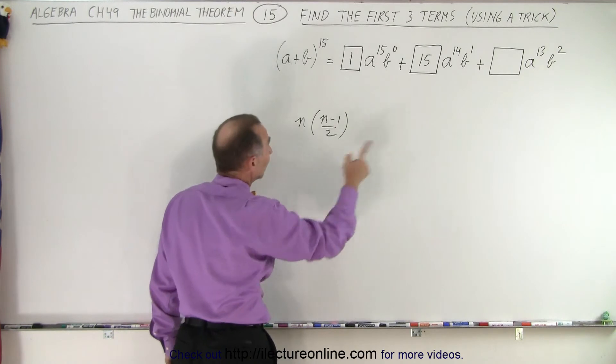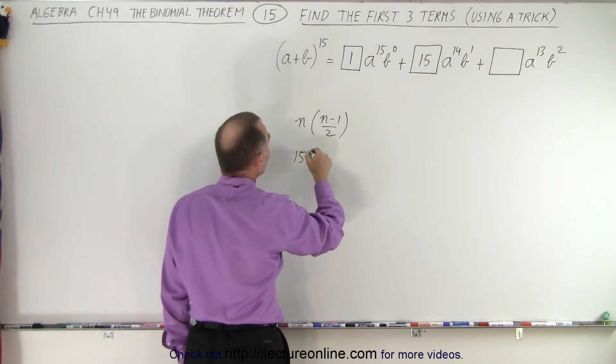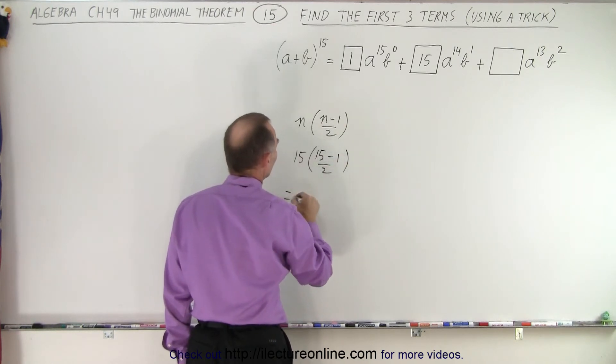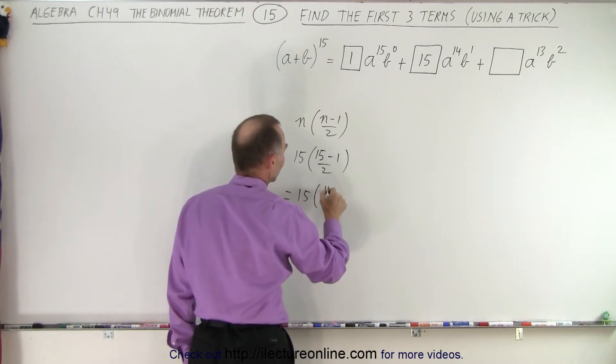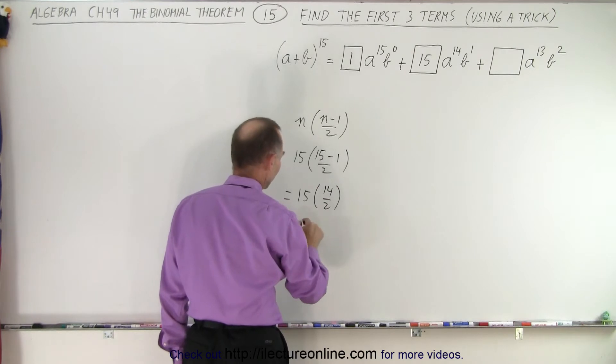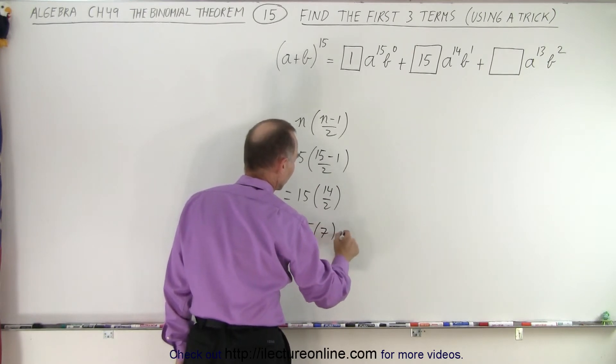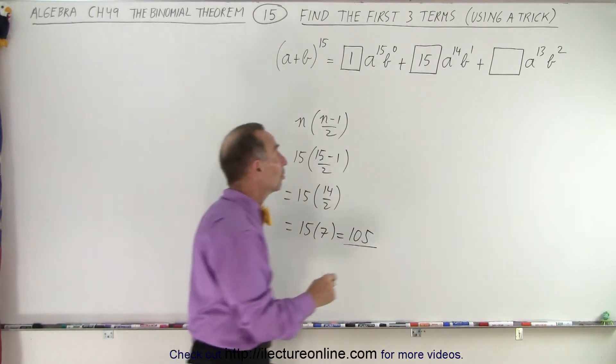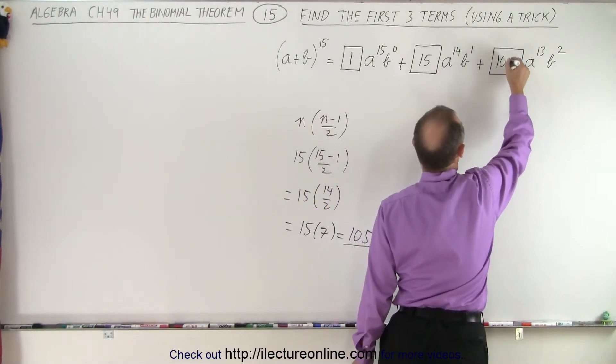So let's try that. In this case that would be 15 times 15 minus 1 divided by 2, which is equal to 15 times 14 divided by 2, which is 15 times 7, which is 105. And so that will then become the numerical coefficient of the third term.